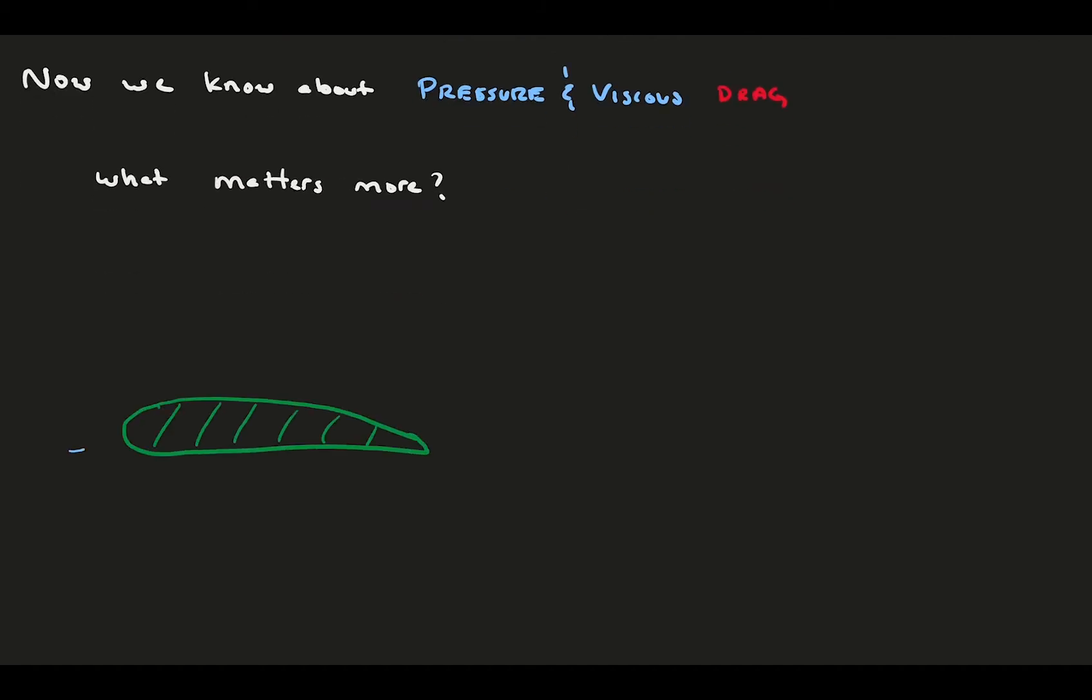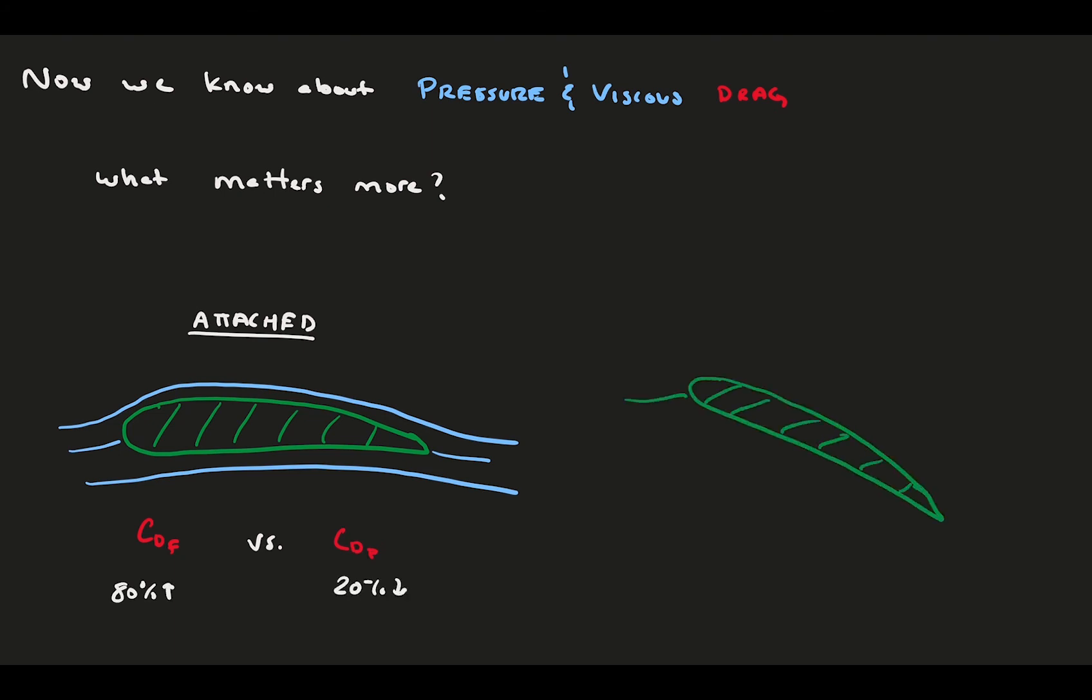Now that we have a better understanding of viscous drag and pressure drag, which one is more important? For fully attached flow, measurements and simulations indicate that viscous drag is the largest, somewhere around 80% of the total drag, though it depends on foil shape and flow condition. Once flow is separated, the pressure drag dominates.